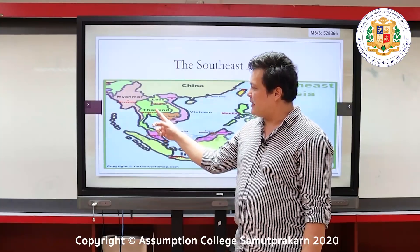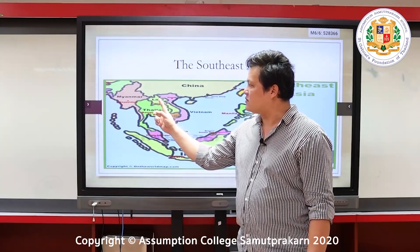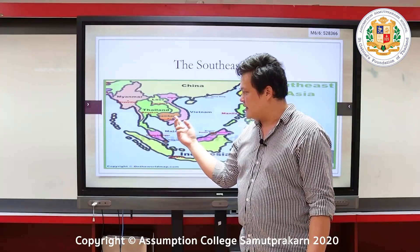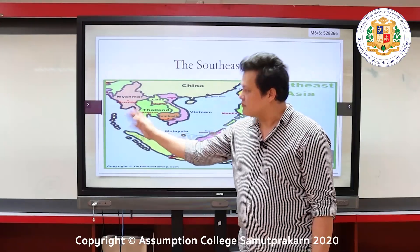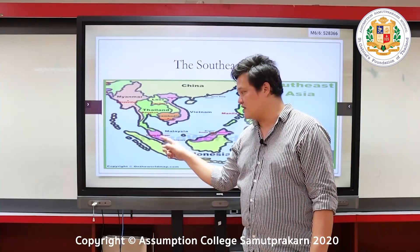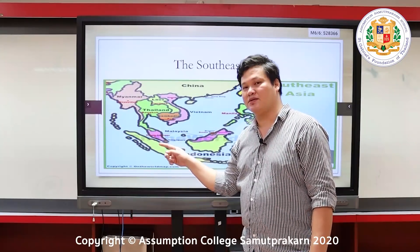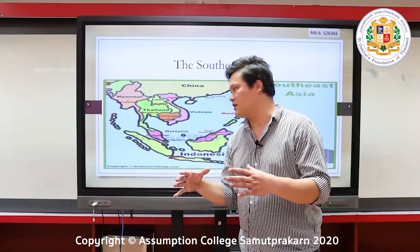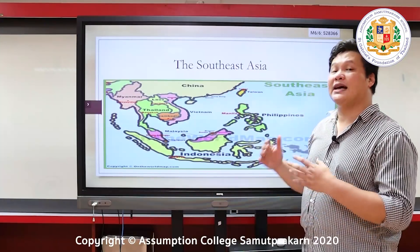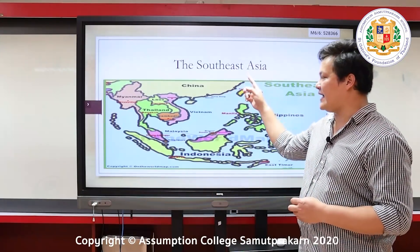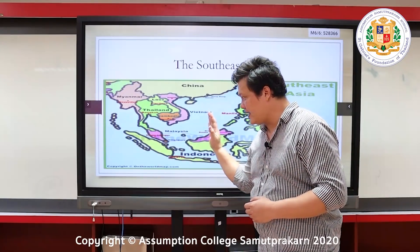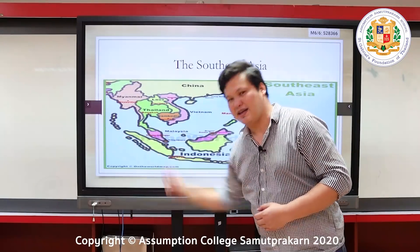Thailand is bordered by countries in the north: Laos and Myanmar. In the east is Cambodia. In the west is also Myanmar. Down south is Malaysia. Thailand is located in Southeast Asia, surrounded by the South China Sea and the Indian Ocean.